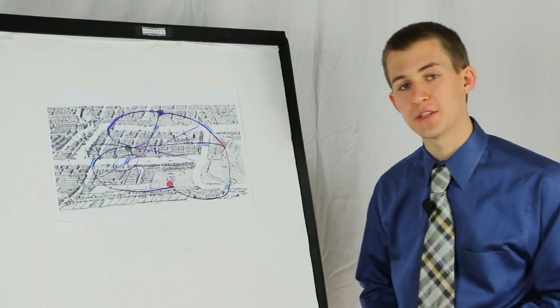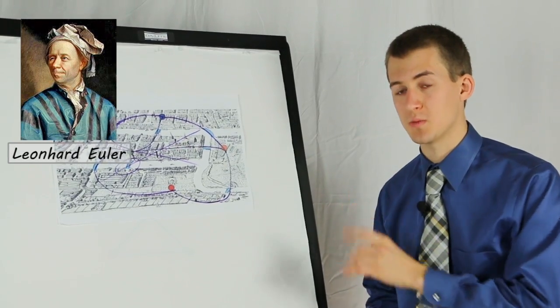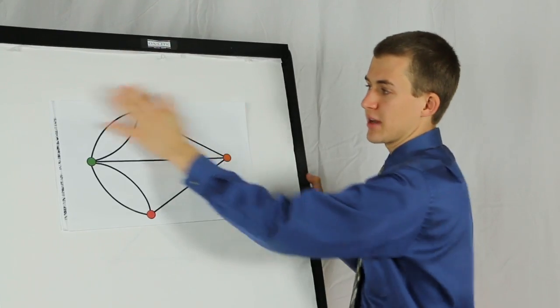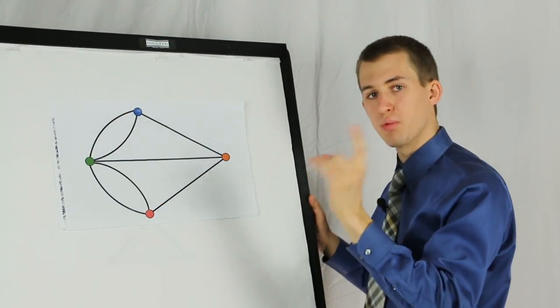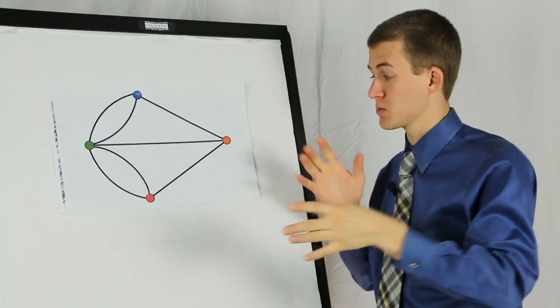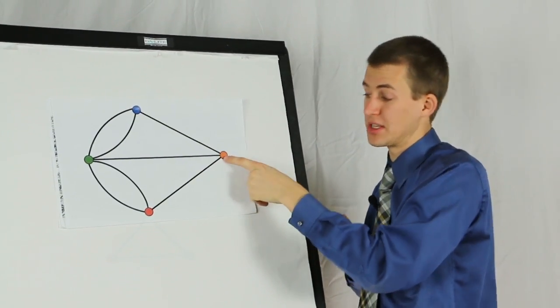In 1736, Leonard Euler solved this problem. He drew the problem as an abstract network in which each bridge was represented by one edge, and each landmass was represented by a node, or these dots here.